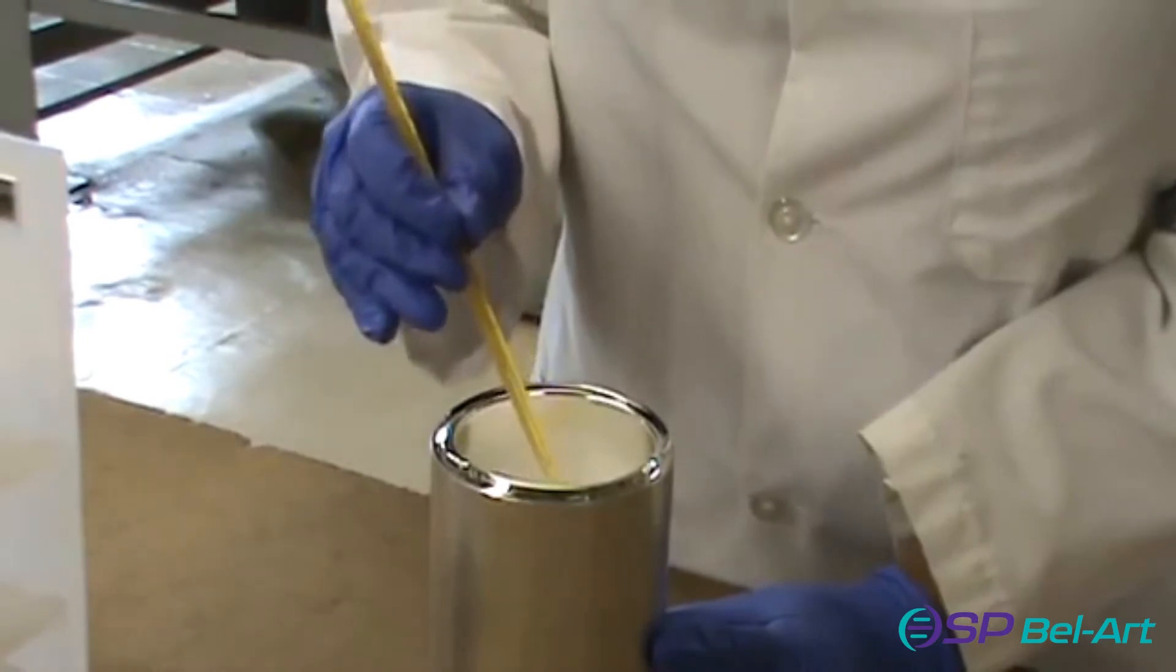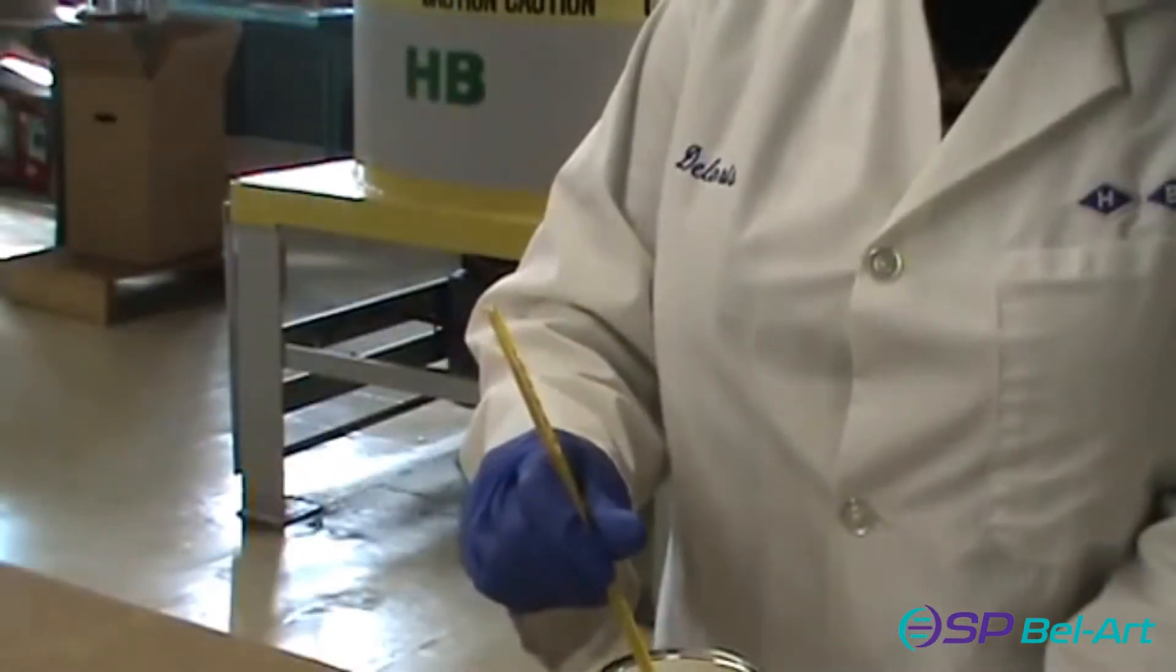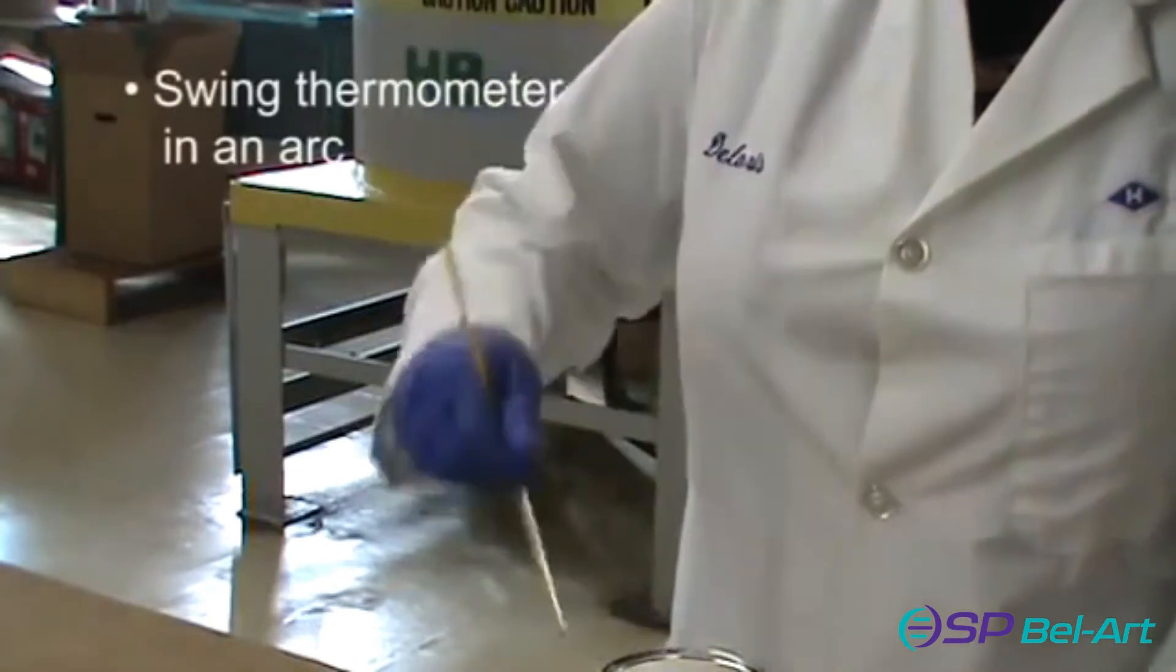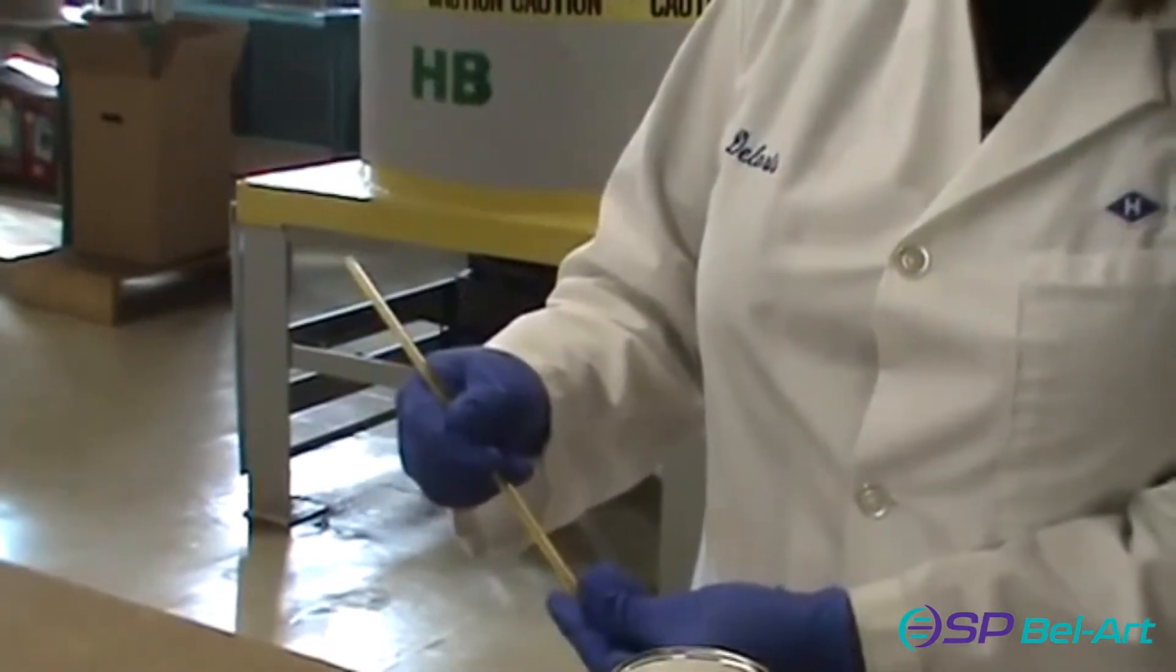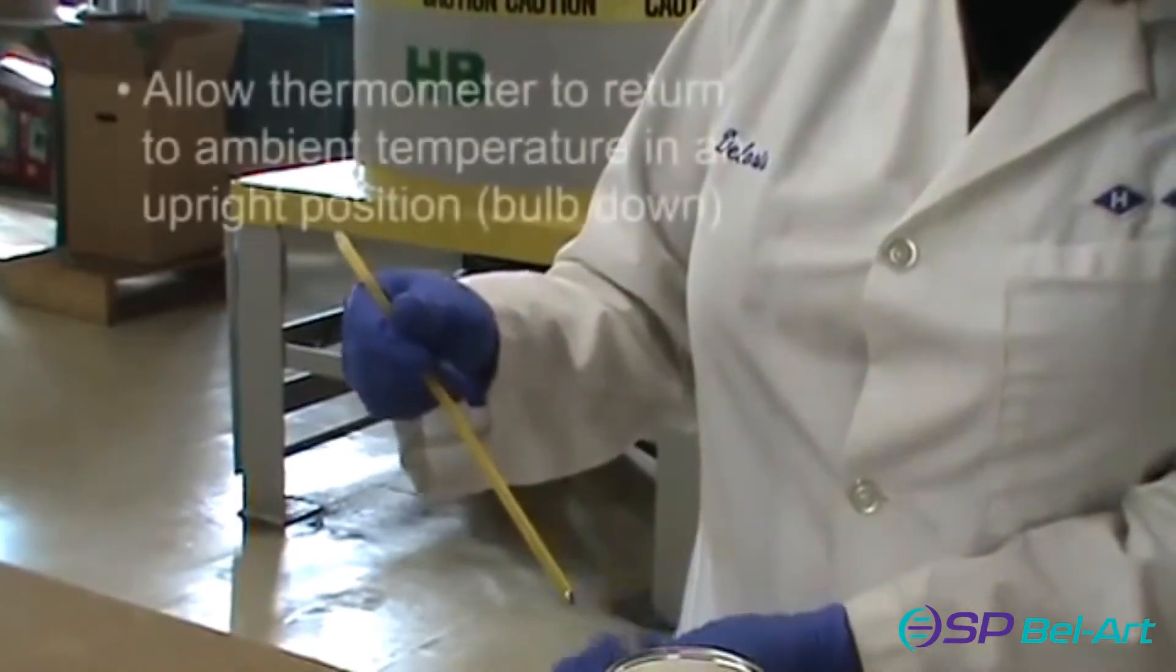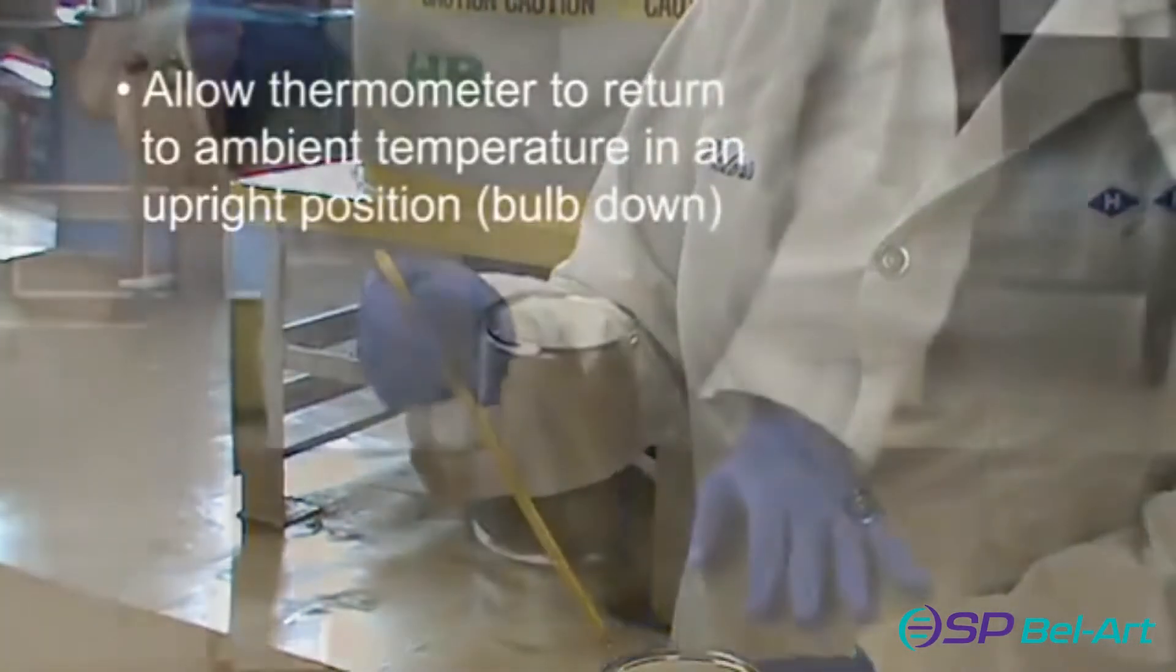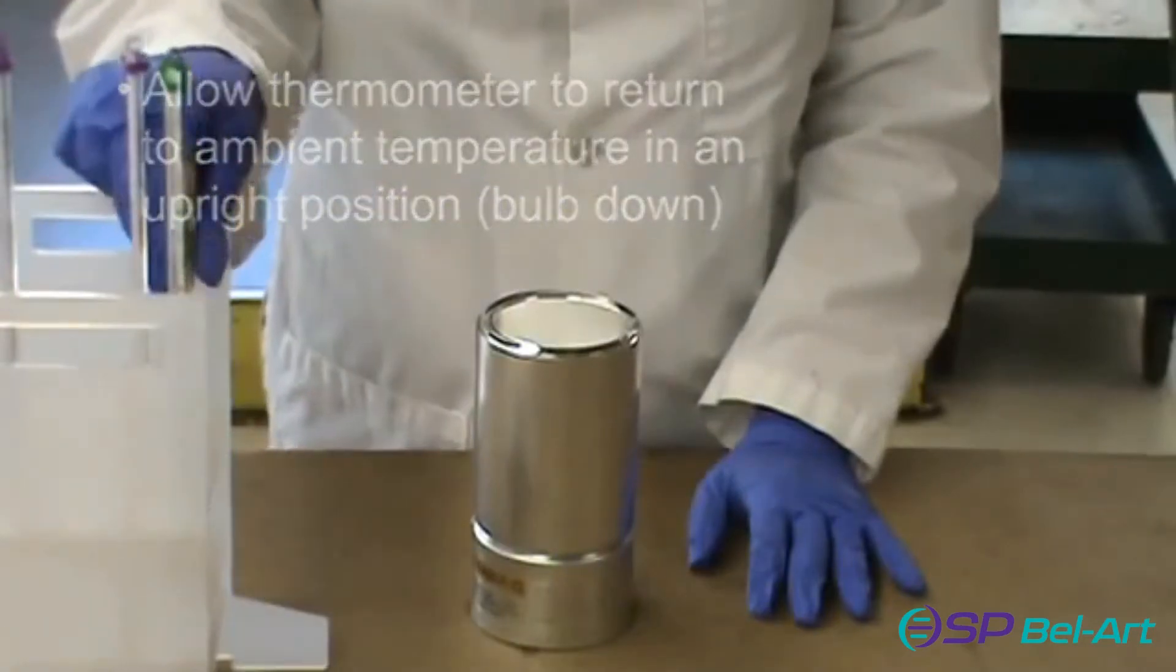Once all the liquid has retreated into the bulb, swing the thermometer bulb down in an arc, forcing the entire gas above the column. Allow the thermometer to return to ambient temperature in an upright position. Repeat until the separation has been reunited.